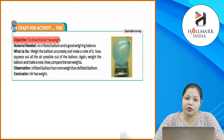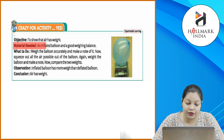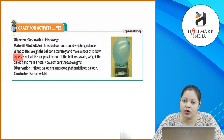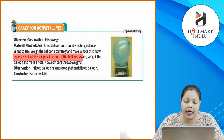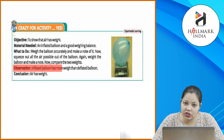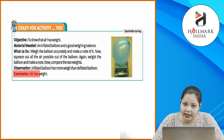Crazy for activity — objective: to show that air has weight. Materials needed: an inflated balloon and a good weighing balance. What to do: weigh the balloon accurately and make a note of it, then squeeze out all the air possible out of the balloon, again weigh the balloon and make a note, now compare the two weights. Observation: inflated balloon has more weight than deflated balloon. Conclusion: air has weight.